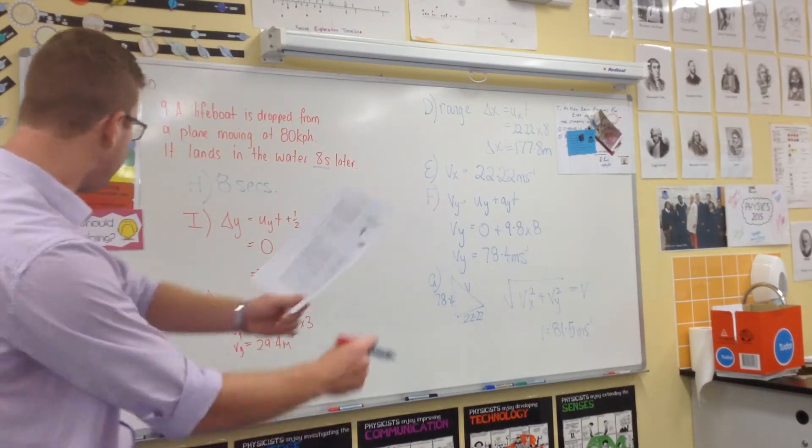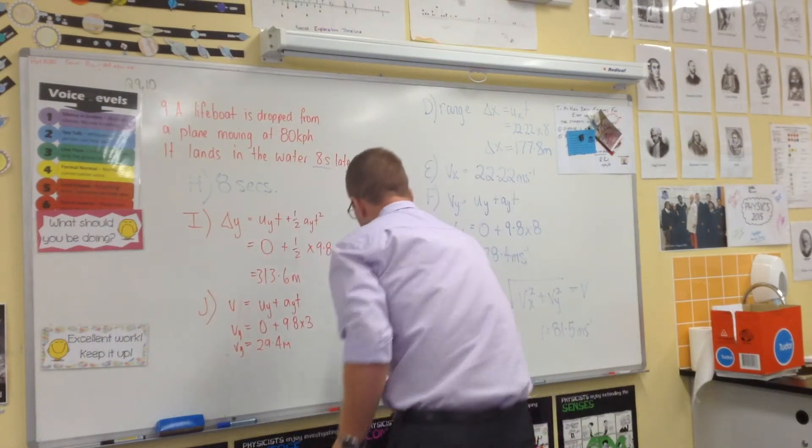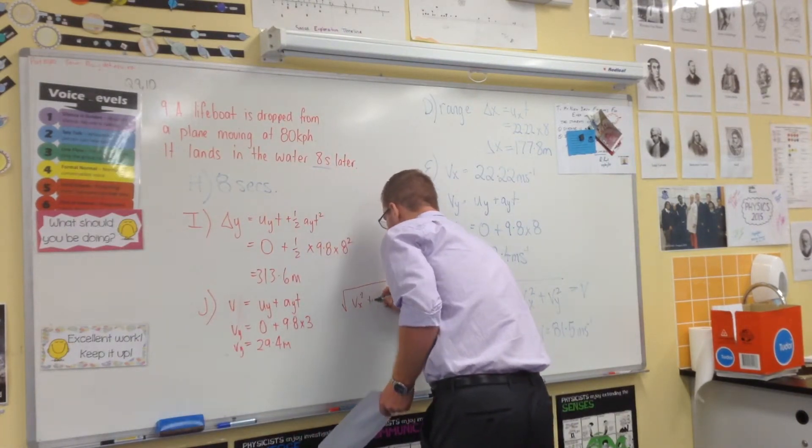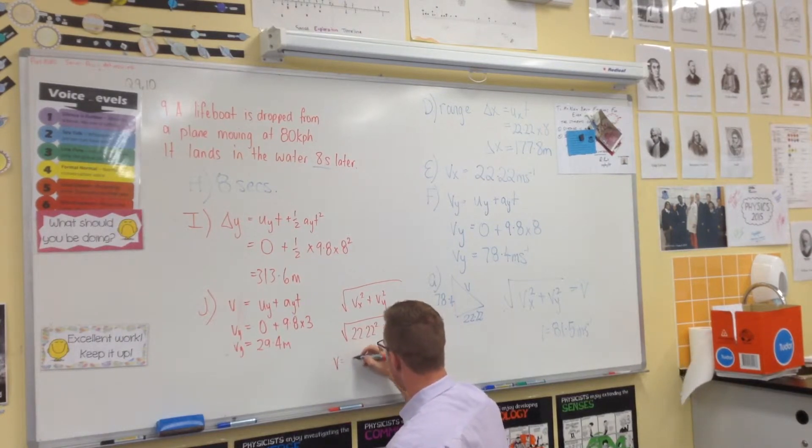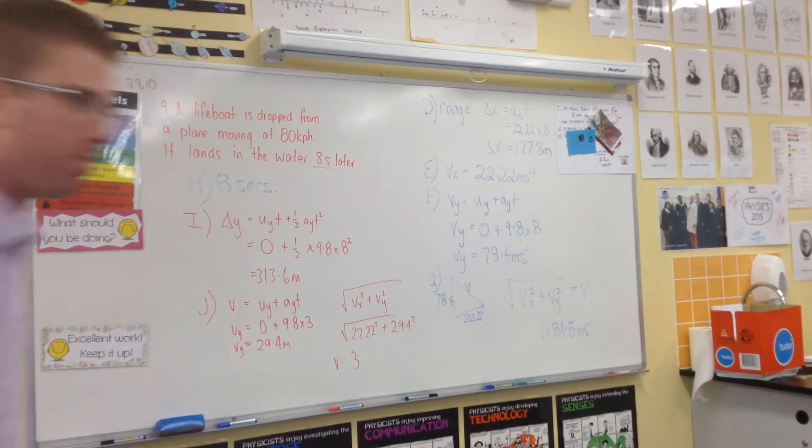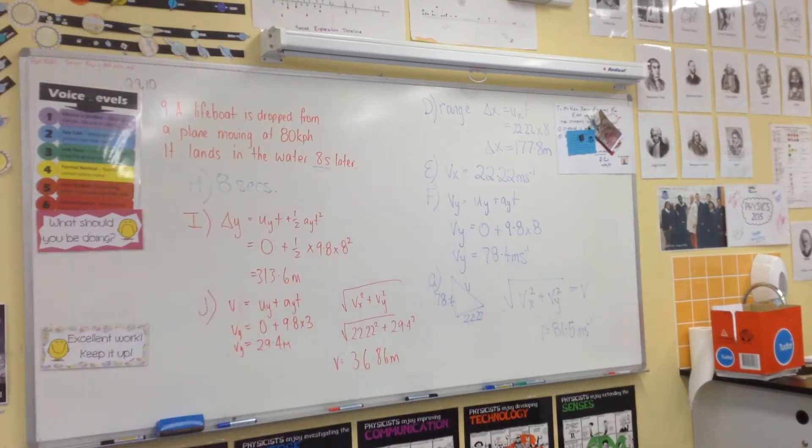Now we need to work out its velocity at that point. We use this formula here to work that out: VX squared plus VY squared. VX is 22.22 from earlier parts. 29.4 is just what we worked out. V equals 36.86 meters. Now I'm happy with that.